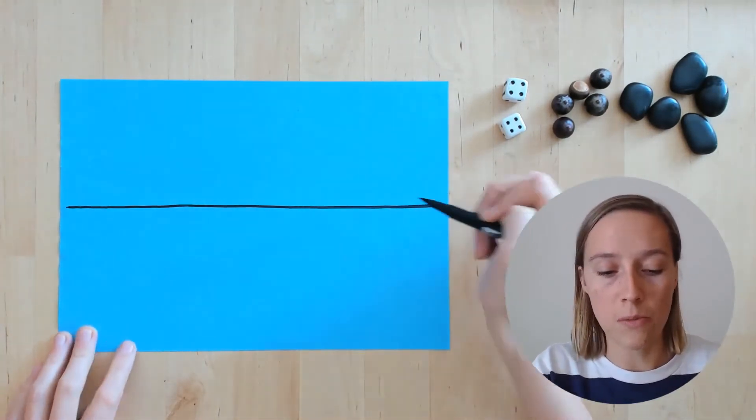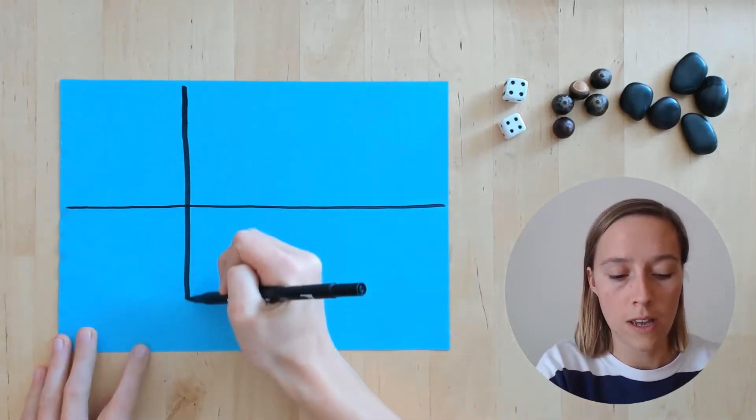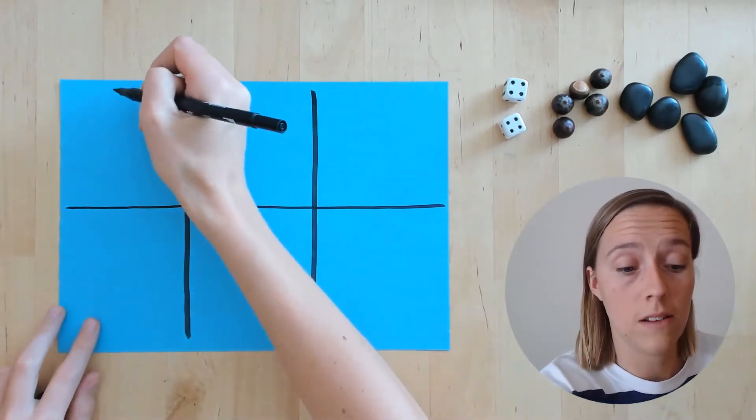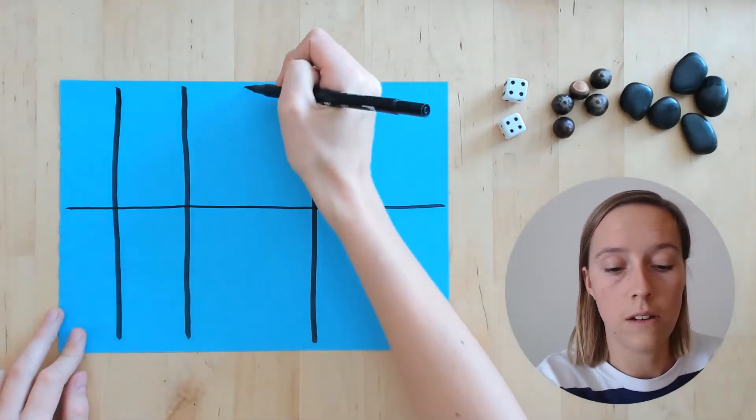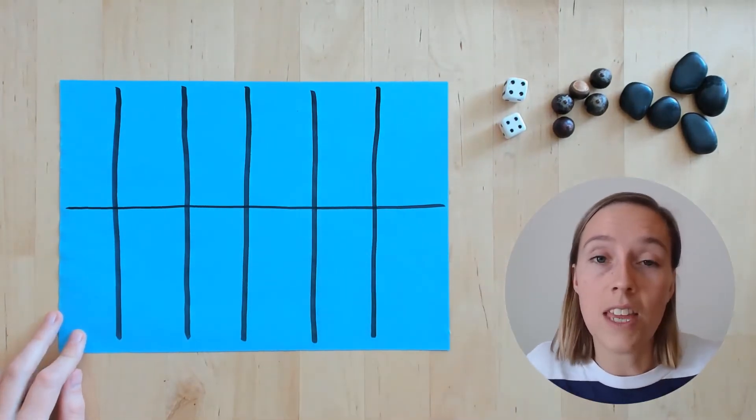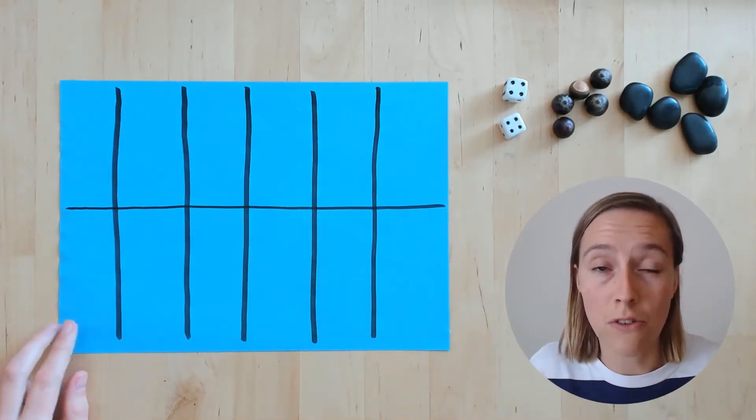Start off doing it the same as before with one line across and two lines down. But then you're going to split these boxes again. One, two, three. Then you can label your boxes from one to twelve.